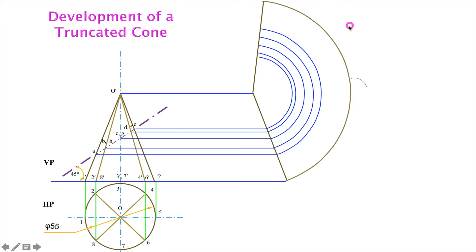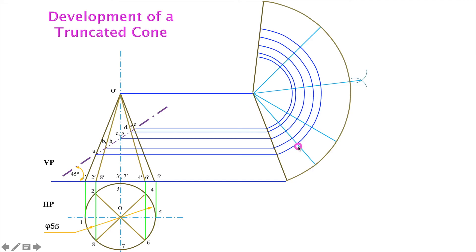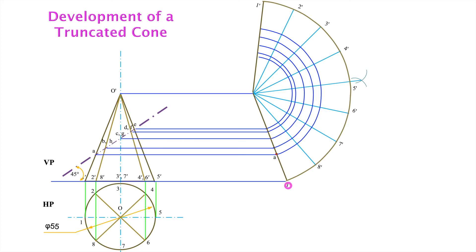Now divide this arc into equal divisions. First divide this angle, then join this point and this point. Again divide this angle. Similarly, divide it further. So it is 8 divisions. Now we can give the names of the points as 1-dash to 1-dash. It is the point on the base. Now how we are having A-dash — A is lying on the slant height. A is 1-dash, O. This is the O point.